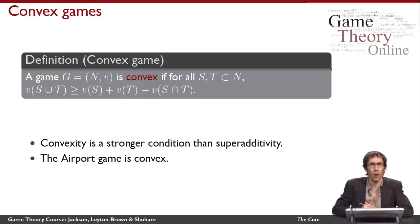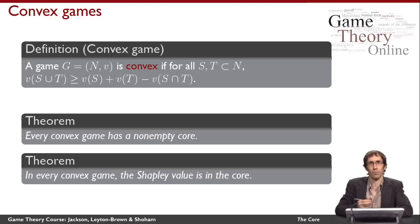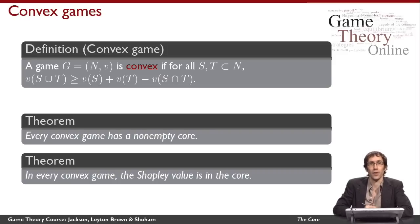Convex games allow us to say some positive things about the core. First, in convex games the core is always non-empty — there is always at least some way of dividing payments among all agents to support the grand coalition such that no subset would wish to deviate. Second, and even better, the Shapley value is in the core for convex games. This means that for these games, dividing the grand coalition's value in a way that is stable and dividing it in a way that is fair are not goals at odds with each other — it is possible to achieve both simultaneously.